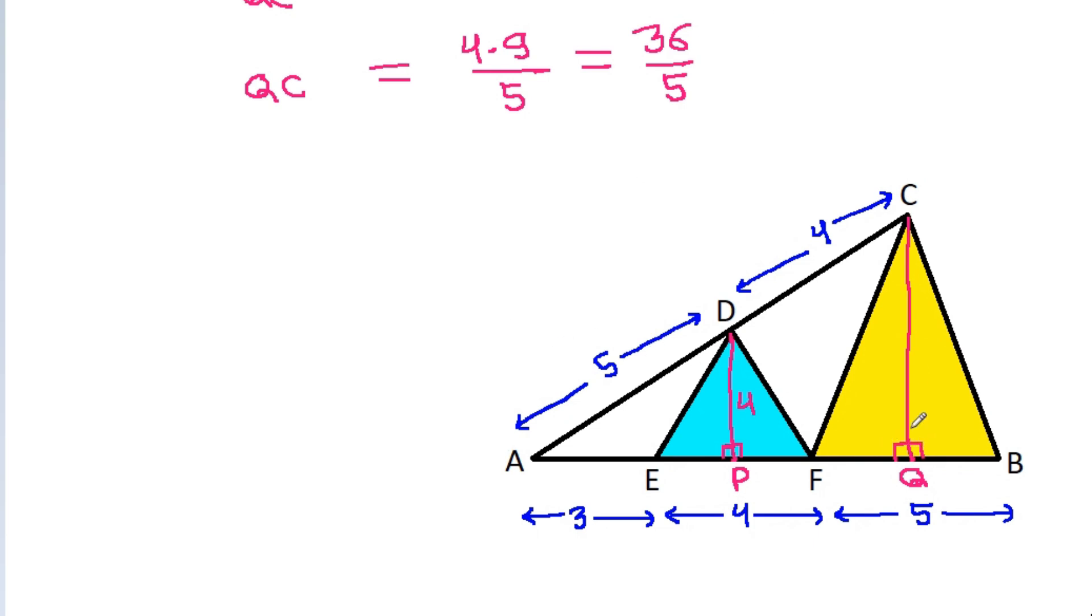QC is 36 by 5. And now, the yellow area is equal to the area of triangle CFB.